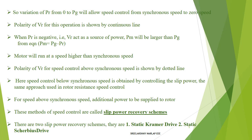The variation of PR from zero to PG allows speed control from synchronous speed down to zero. Speed is below the synchronous speed in this operating range. At that time, the polarity of VR is shown by a continuous line in the diagram. That continuous line represents the polarity of VR for speed control below synchronous speed.